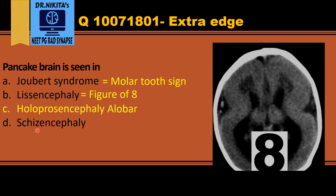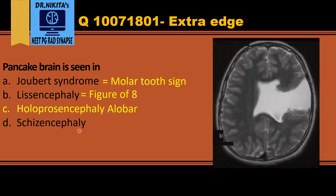Schizencephaly — like schizophrenia means split personality — schizencephaly means a split in the brain. There is a cleft that extends from the ventricular surface to the cortex. It may be open, containing CSF, lined by gray matter. So schizencephaly is a split or cleft in the brain that is CSF-filled in the open variant.